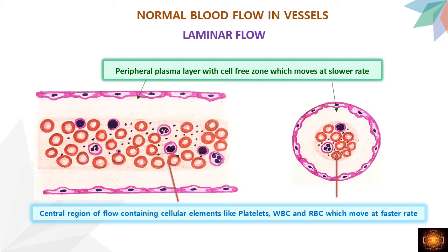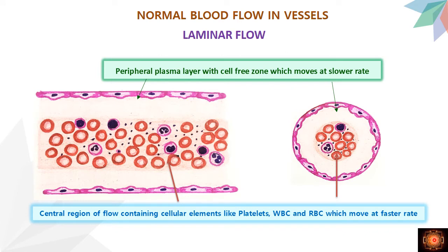The other cause is alteration in blood flow. Normally in vessels we have laminar flow, where cellular elements — RBCs, WBCs, and platelets — are present in the central region, while at the periphery there is only a plasma layer free of cells. The central zone moves faster while the peripheral plasma moves slower. Because of this laminar flow, cells do not come in contact with endothelial cells, so there is no activation of endothelial cells.